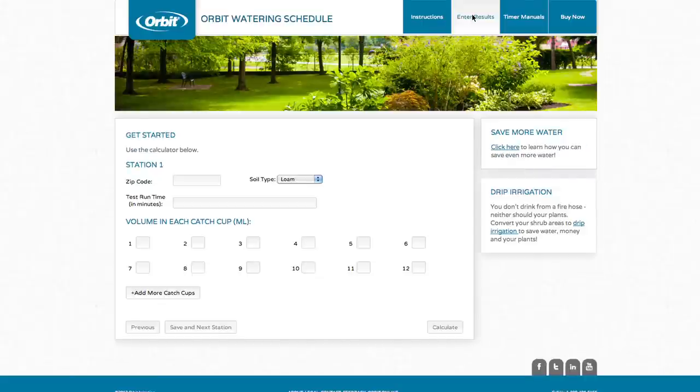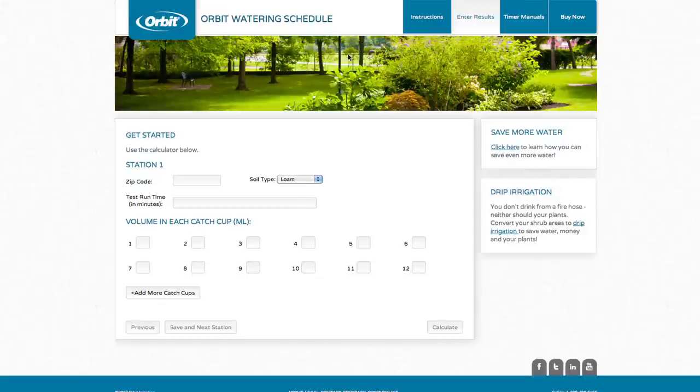After you've clicked the Enter Results button, this is where you'll enter your zip code. Select your soil type and put in the number of minutes you ran the test for. After you've entered that information, this is where you'll enter the actual catch cup data you recorded.